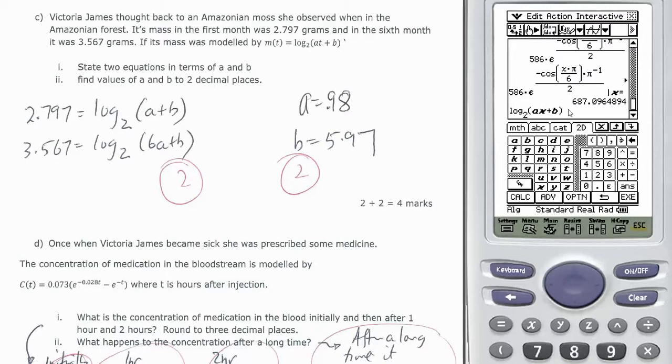And I'll make that equal to, so I'm going to make it equal to 2.797.